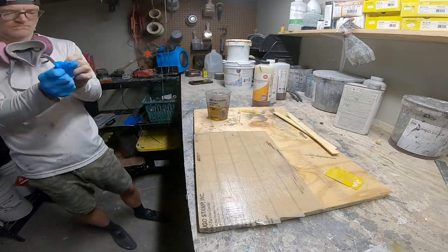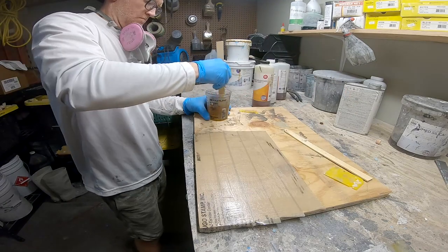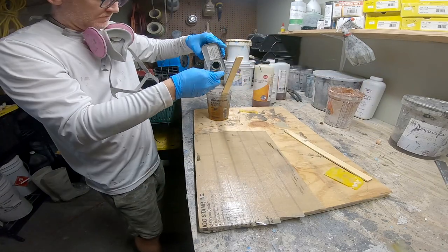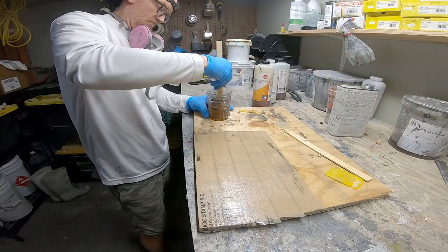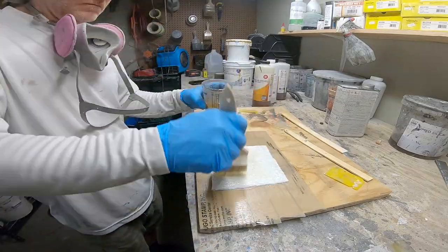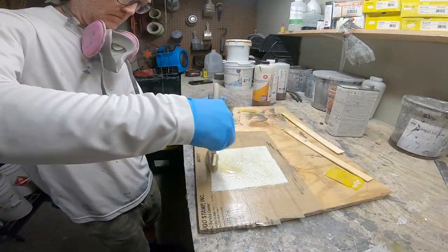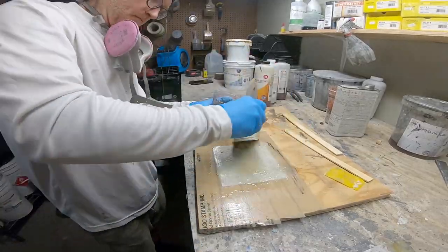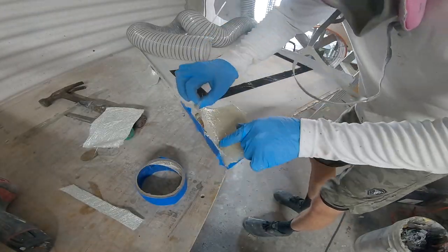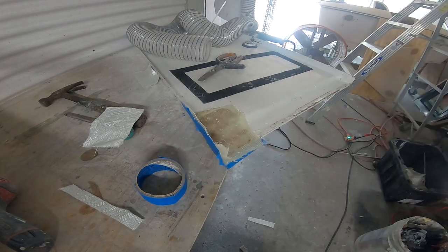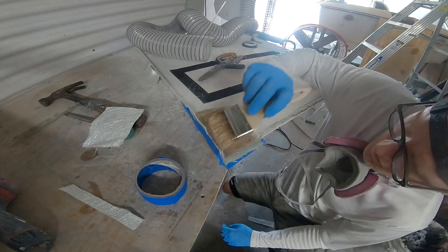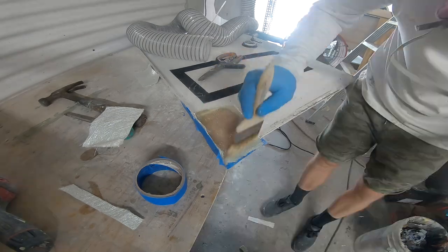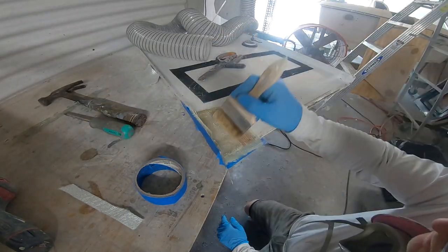So here I'm using some one-to-one laminating epoxy. I'm just mixing it up and then I added a little bit of epoxy reducer to it as well because we're using 1708 here and you want the epoxy to be as thin as possible because it's hard to wet out 1708 with epoxy. That chop strand mat soaks up about 30 percent more resin than what you'll need so the reducer helps make that a little bit easier.